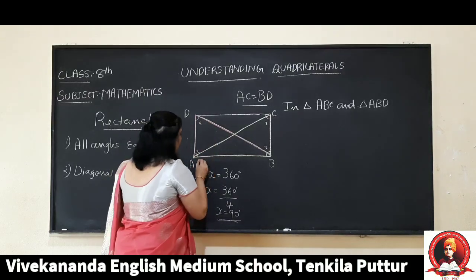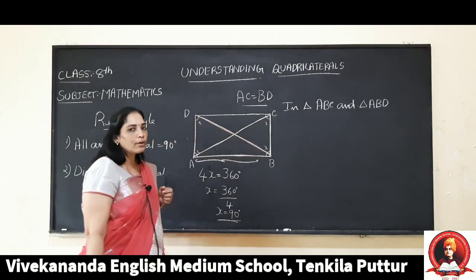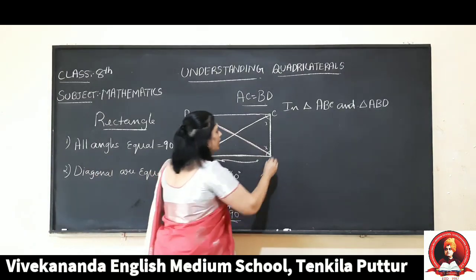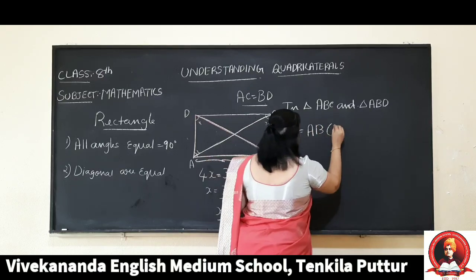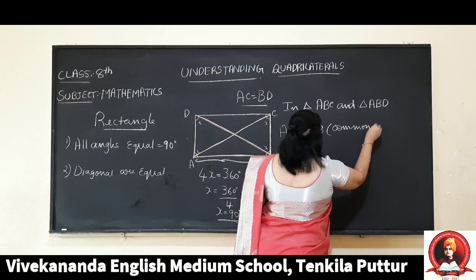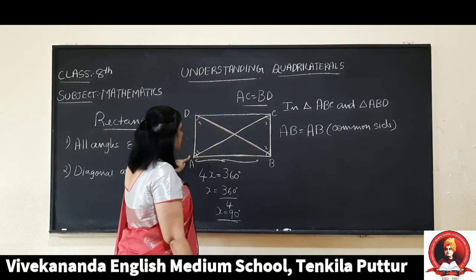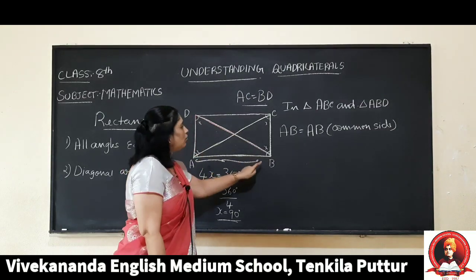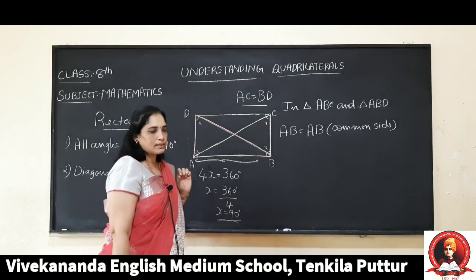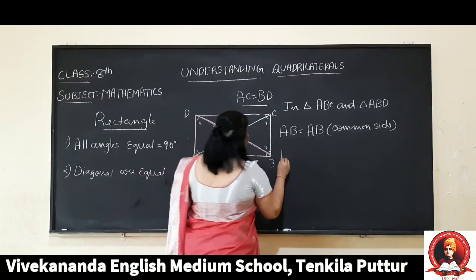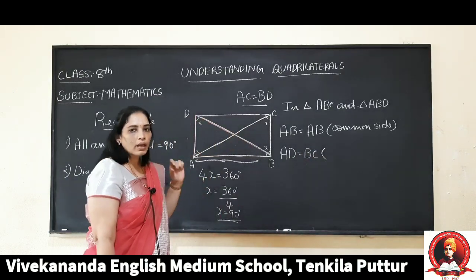Here AB is common for both triangles, so I can write AB equals AB. The reason is it is a common side. Next, I can write AD equals BC. These two are opposite sides, and as we know, opposite sides are equal.